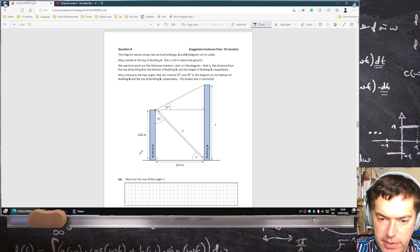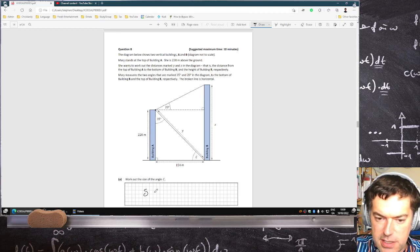Okay, they all add up to 180, so the three angles add up to 180, that means C has to be 55.